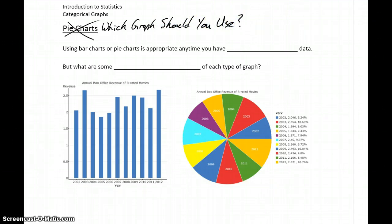Using bar charts or pie charts is going to be appropriate anytime we have categorical data that we want to graph. But we want to talk a little bit about some of the drawbacks and some of the advantages of each of these types of graphs.